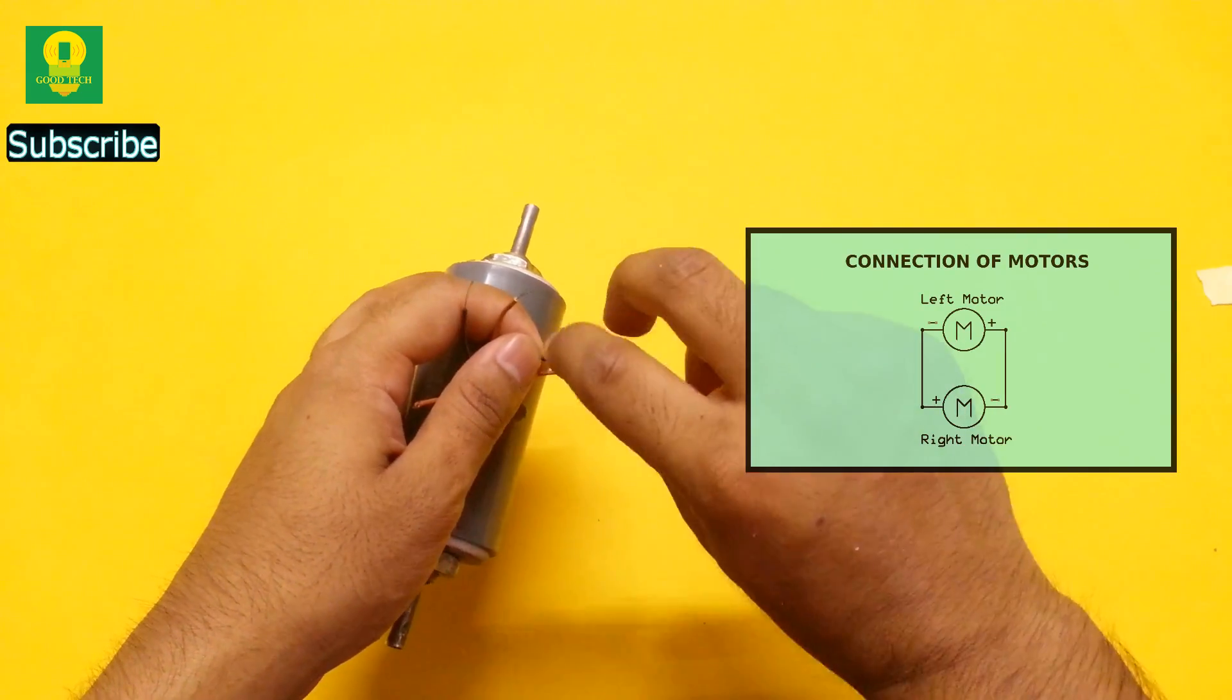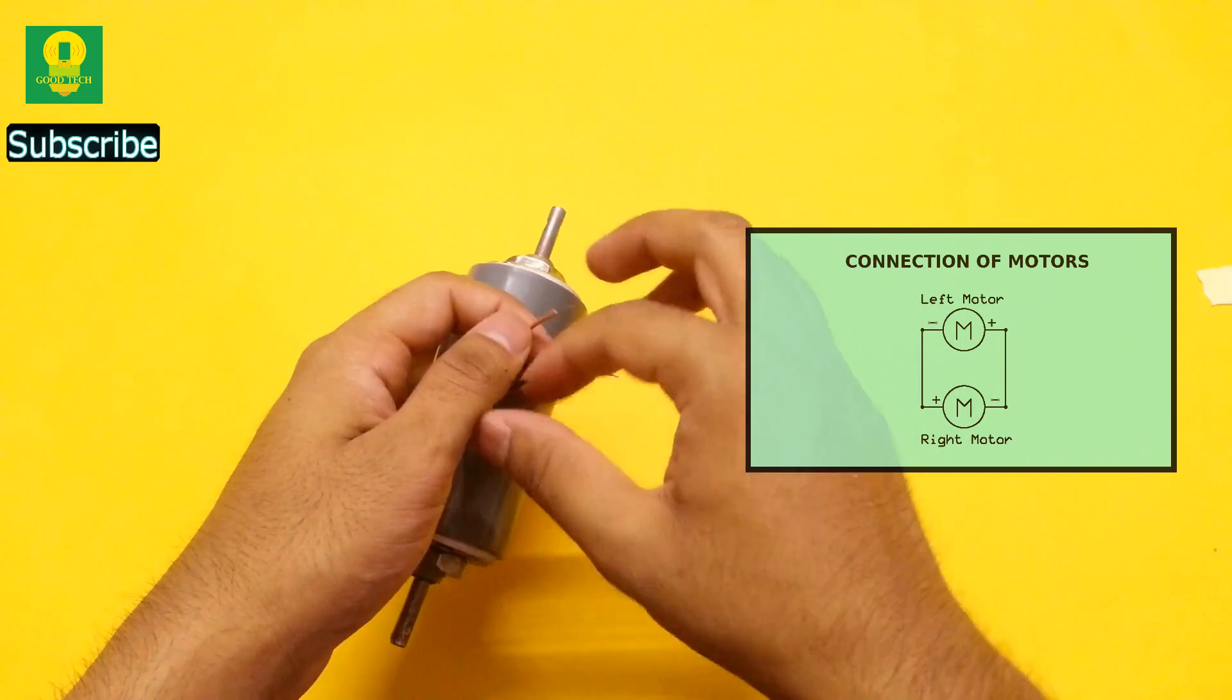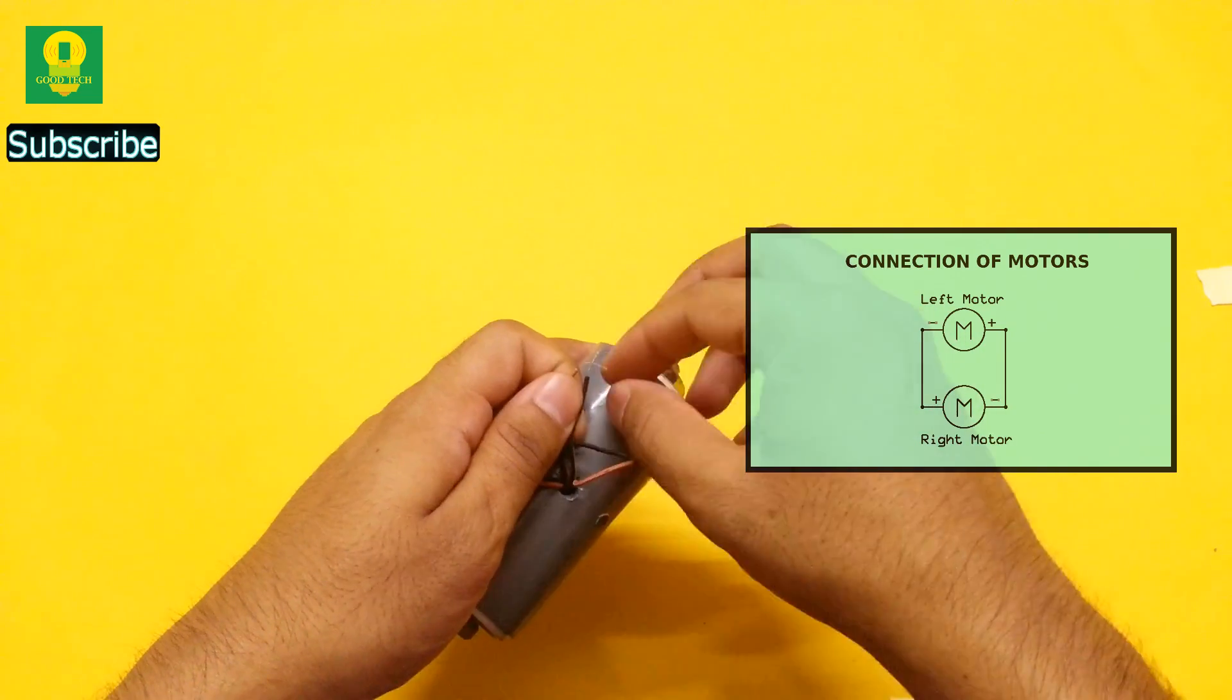Now connect the two opposite motors according to the schematic. That is, connect the positive wire of one motor with the negative wire of the other motor.